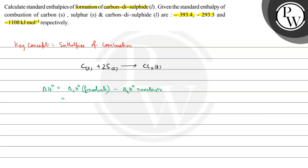So the enthalpy of combustion of the product — that is ΔcH° of carbon disulfide liquid — minus ΔcH° of carbon solid, minus 2 multiplied by (because the coefficient of sulfur is 2) ΔcH° of sulfur solid.